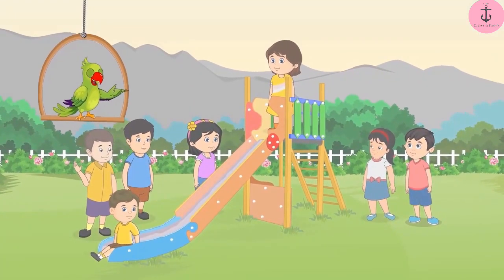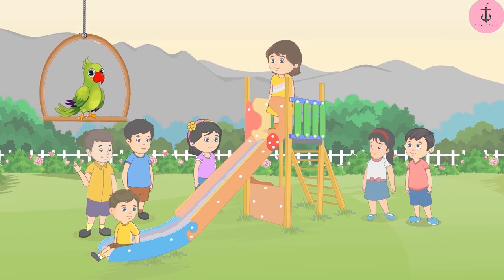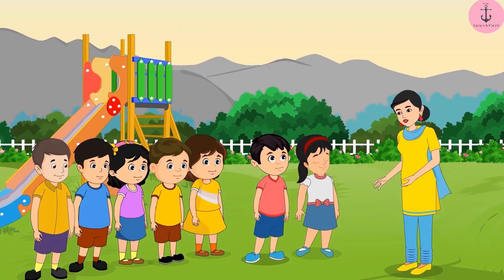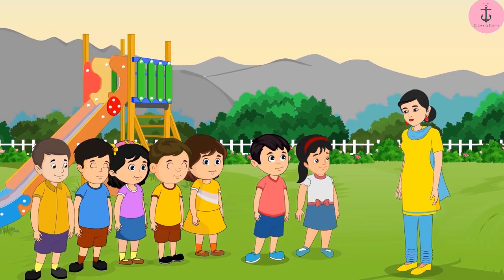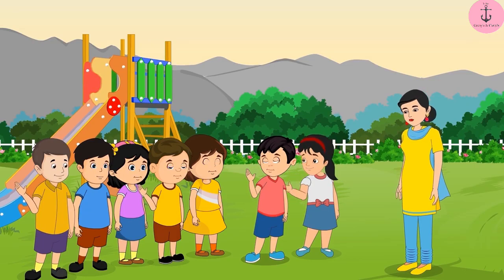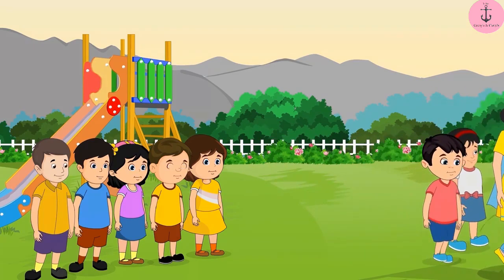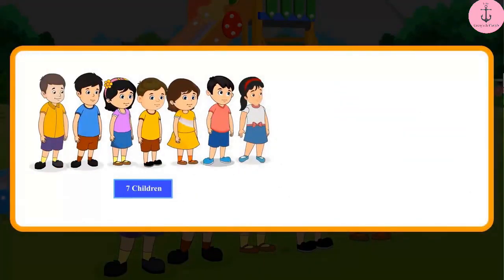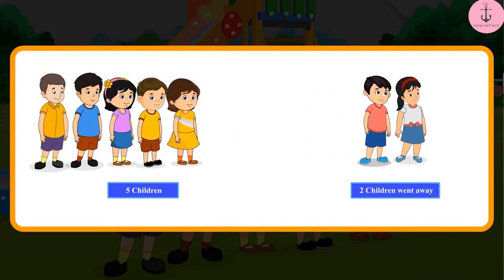It is evening and Chotu and Pinky are playing with five of their friends in the park. Can you tell me how many children are playing in total? Yes, five and two — that means seven children. Chotu and Pinky's mother comes to take them home. Chotu and Pinky, come, let's go home quickly. Uncle has come to meet you. Bye, friends. Pinky and Chotu go back home with their mother. Now, can you tell me how many children are left in the park? Out of seven children, two children went away, so there are five children left.